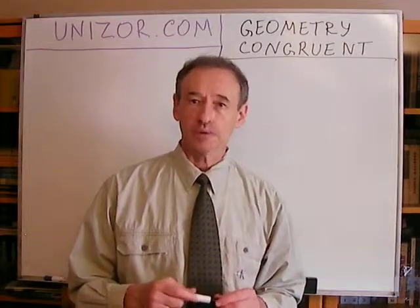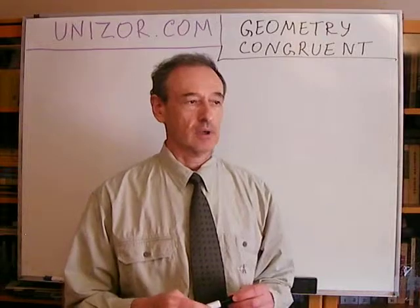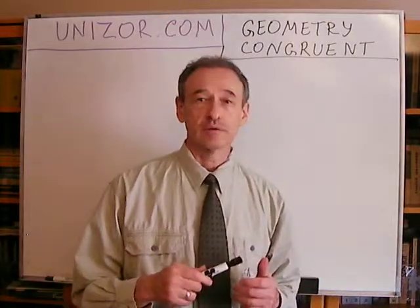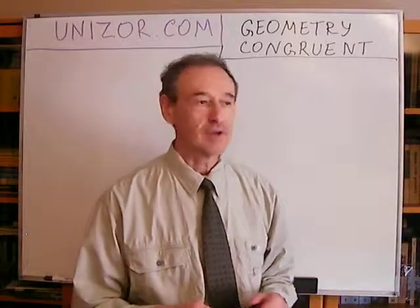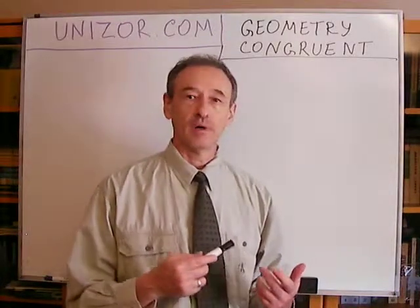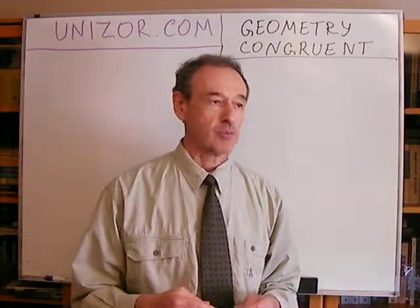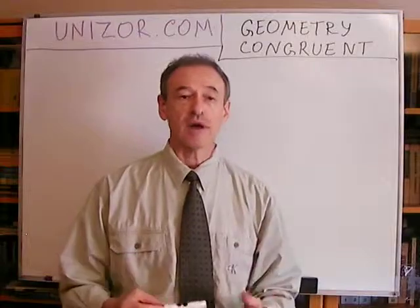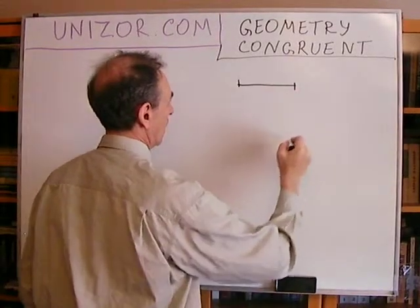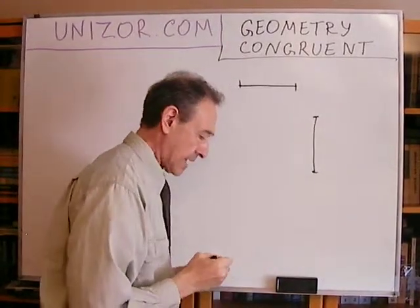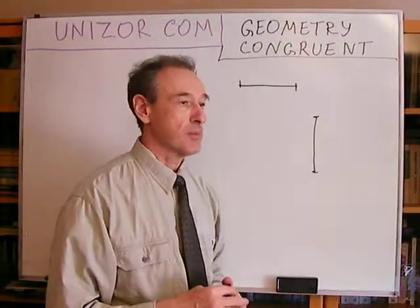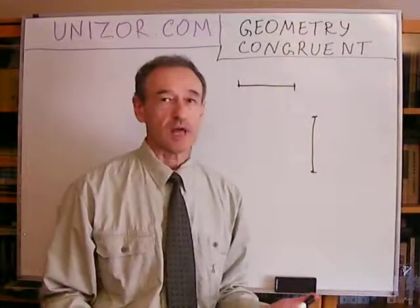Congruent figures are basically equivalent from the logical standpoint to equal objects in algebra. Sometimes I will use the word 'equal' by accident — I really mean congruent when speaking about geometrical figures. Why do we talk about congruent geometrical objects? Basically, it's just to signify that the properties of these two objects are exactly the same. If I draw two different segments, what does it mean that these two segments are congruent? In the case of segments, since it's such a simple geometrical object, it means the lengths of these two segments are exactly the same.